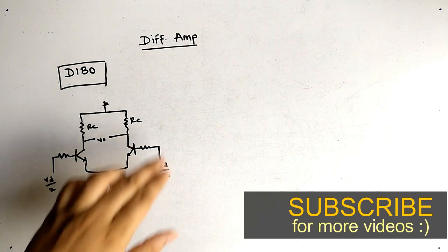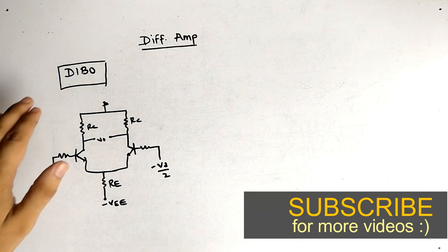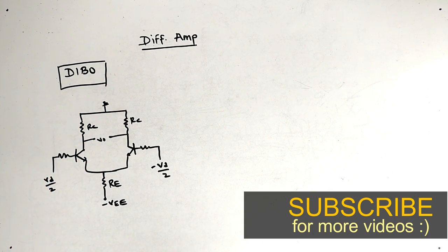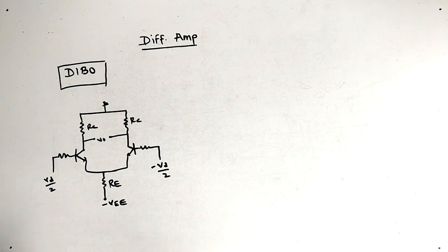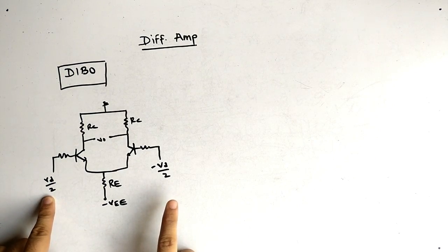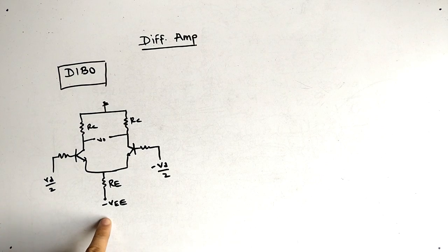Hello friends, today our topic is differential amplifier. So basically DEBO means dual input balanced output. So this is the circuit of differential amplifier. You can note the inputs are Vd by 2 and minus Vd by 2.